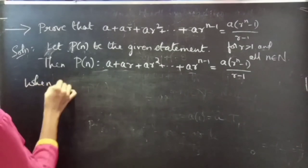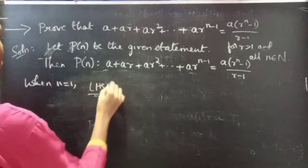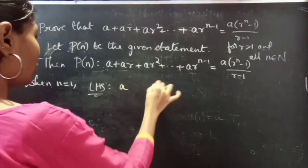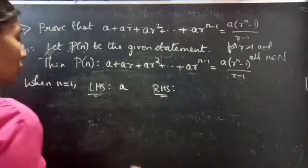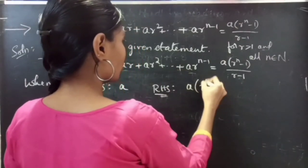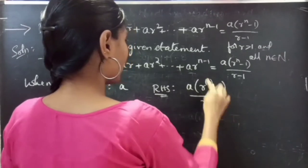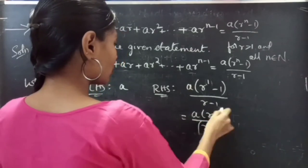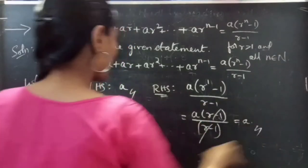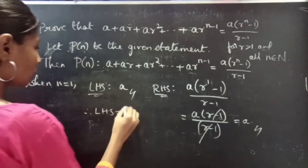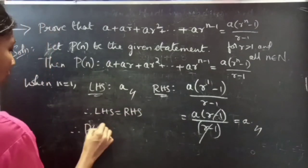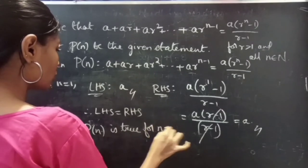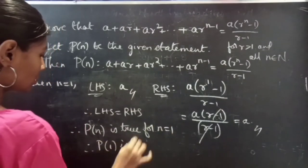When n equals 1, for the LHS we take only the first term, which is a. Coming to the RHS, putting n equals 1 gives a times (r to the power 1 minus 1) divided by (r minus 1), which equals a times (r minus 1) divided by (r minus 1). Here r minus 1 cancels, giving a. So LHS equals RHS, and therefore P of n is true for n equals 1, that is P(1) is true.